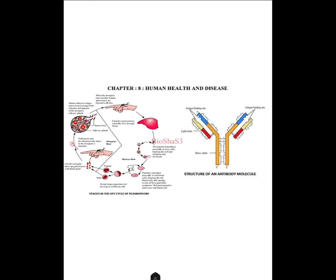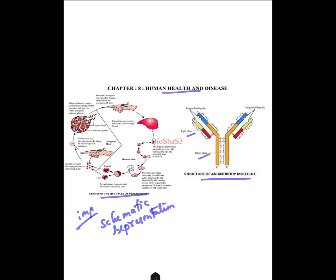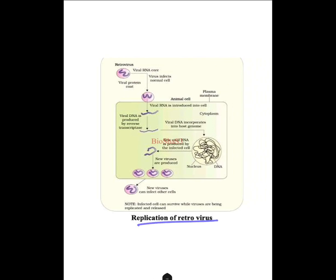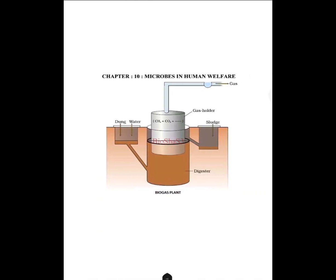From Chapter 8, Human Health and Diseases: the stages in the life cycle of Plasmodium — this is important and they will ask you for the schematic representation. The structure of the antibody molecule is also very important — you have to show the light chain, heavy chain, antigen binding sites, and the disulfide bonds. Practice this — you will get a direct question for three marks: draw a neat labelled diagram of an antibody molecule. Then the replication of retrovirus or the retrovirus cycle — also important and a direct five-mark question.